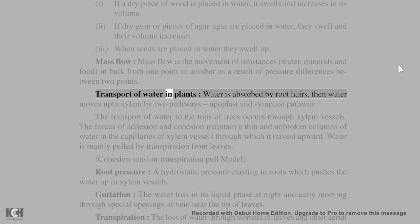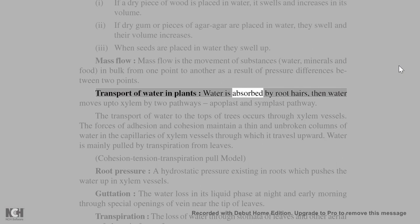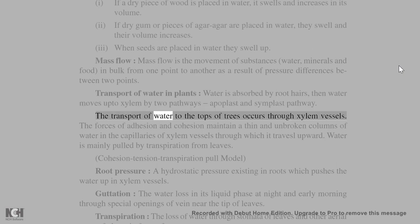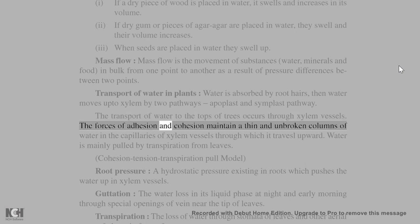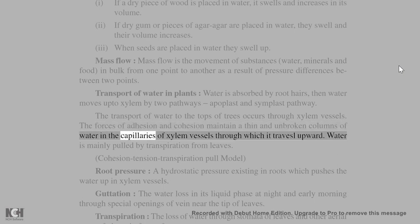Transport of water in plants: water is absorbed by root hairs, then water moves up to xylem by two pathways: apoplast and symplast pathway. The transport of water to the tops of trees occurs through xylem vessels. The forces of adhesion and cohesion maintain a thin and unbroken column of water in the capillaries of xylem vessels through which it travels upward. Water is mainly pulled by transpiration from leaves.